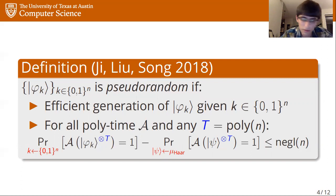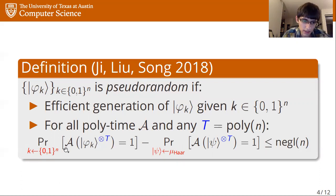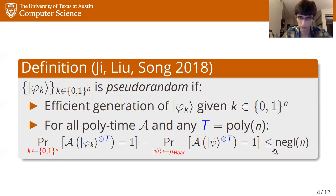The second requirement is a computational indistinguishability requirement, which says that for any polynomial time quantum adversary and for any polynomial number of copies t, this adversary cannot distinguish copies of a HAAR random state from copies of a pseudorandom state. The advantage it gets in distinguishing these two things is negligible.